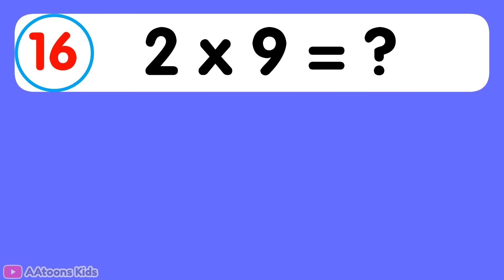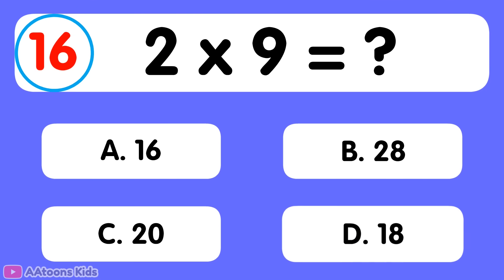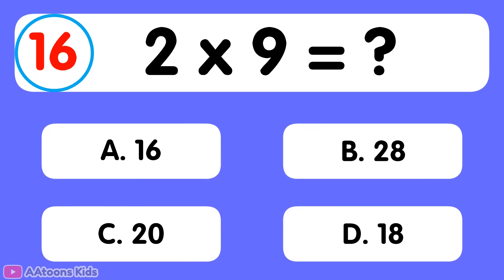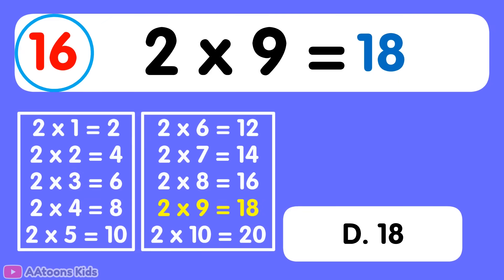2 times 9 is equal to... 18. 2 times 9 is 18.